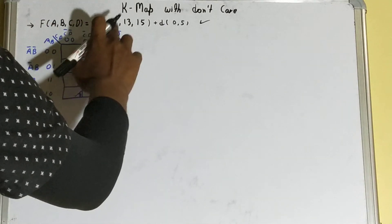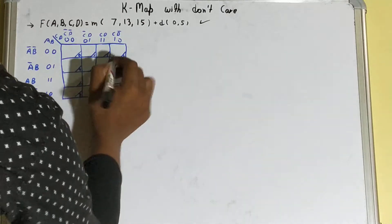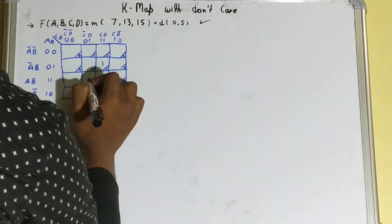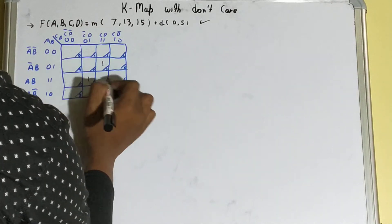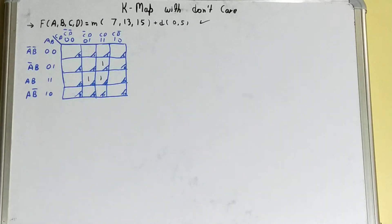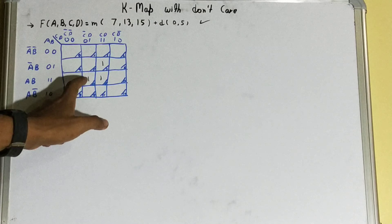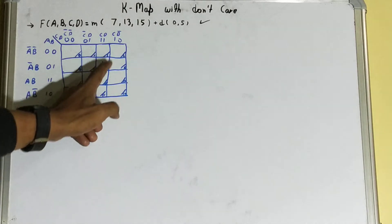So for mapping, it will be 7, 13, and 15. For 7 we'll keep 1, for 13 we'll keep 1, and for 15 we'll keep 1. Now if right now if we see and I ask you what combination we can have, you will directly say that we can make one pair like this and one pair like this, right?